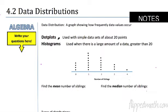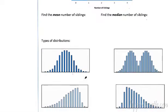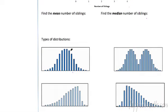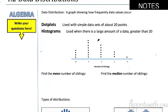A dot plot is used with data sets of about 20 or less — maybe 15 to 25. Or if there's too much data and we have too many values, we use a histogram. We group them together and they make bar shapes. It tells you how much, or a proportion of how much.